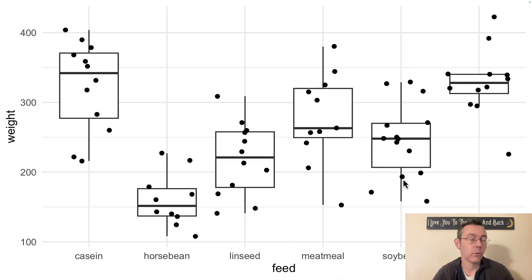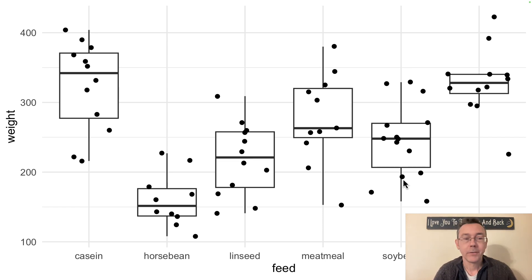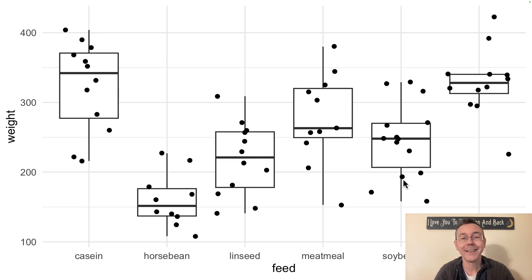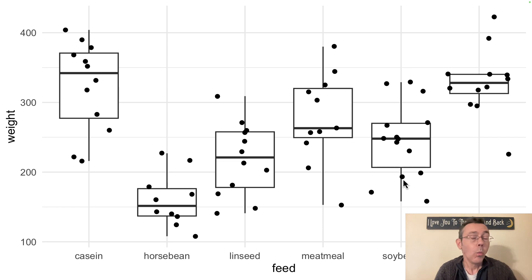From this visualization we can see a few things. At a glance, it does look like these weights are different for some of the different feed values. For instance, looking at that first category — casein, I'm probably mispronouncing it — the weights on average appear higher. Horsebean seems to be much lower. On the other hand, there's substantial spread within most of these categories, and there's a reasonable question whether these weights just look different through random variation or whether there's actually a real relationship between the variables. This is the question that analysis of variance will address.